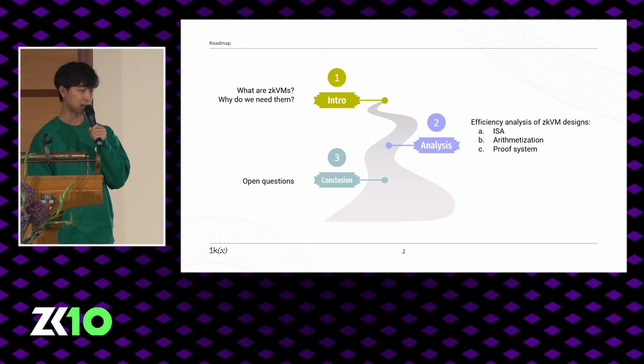We're going to start off with what ZKVMs are and why we need them. We're going to go into efficiency analysis in three parts, including ISA efficiency, arithmetization efficiency, and proof system efficiency, and then we're going to go into open questions.